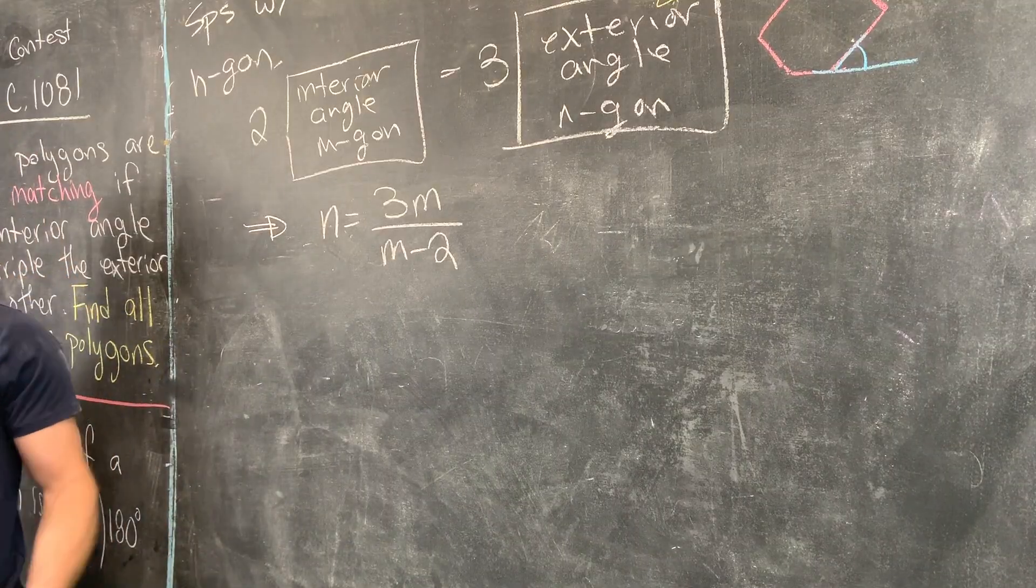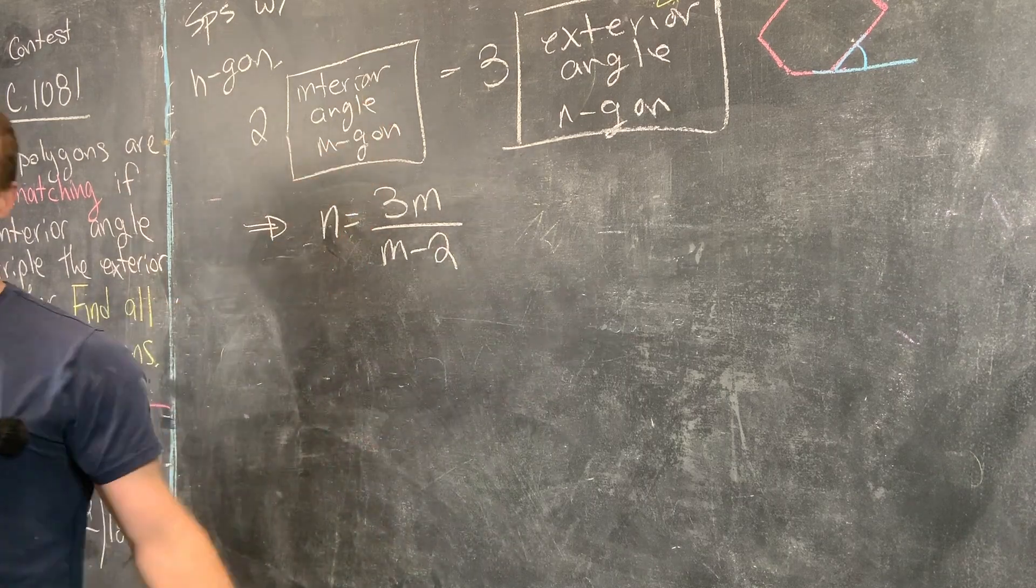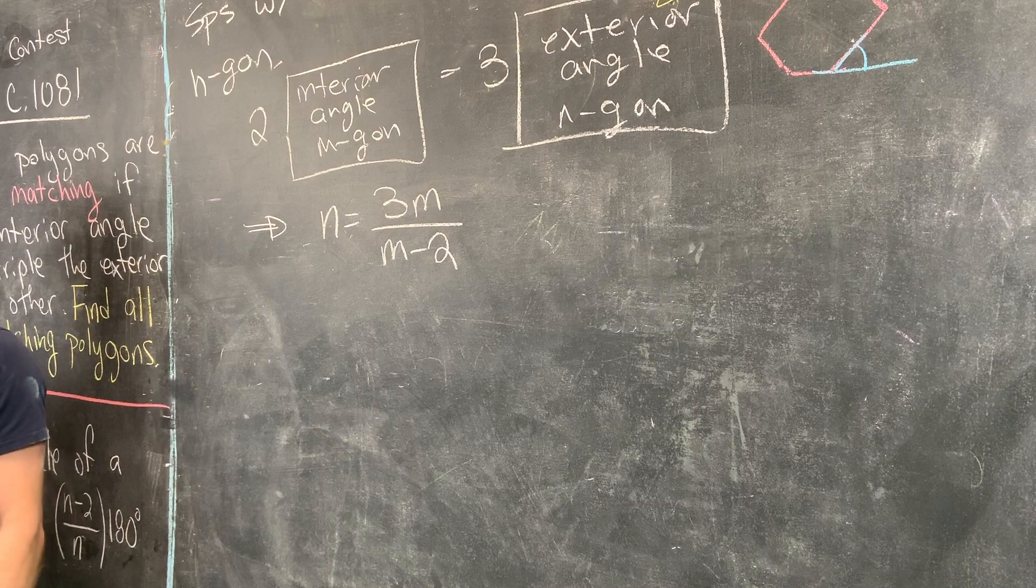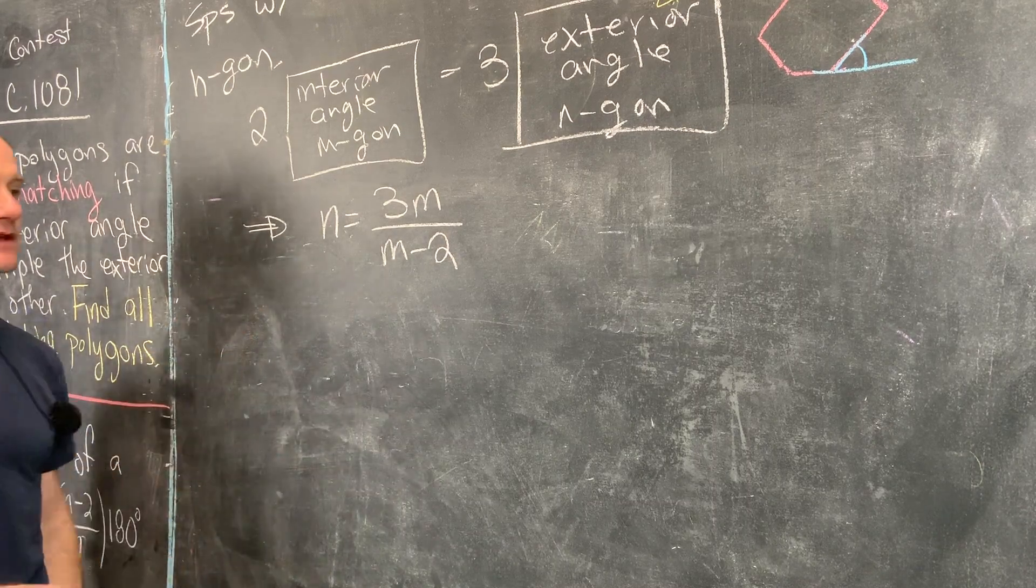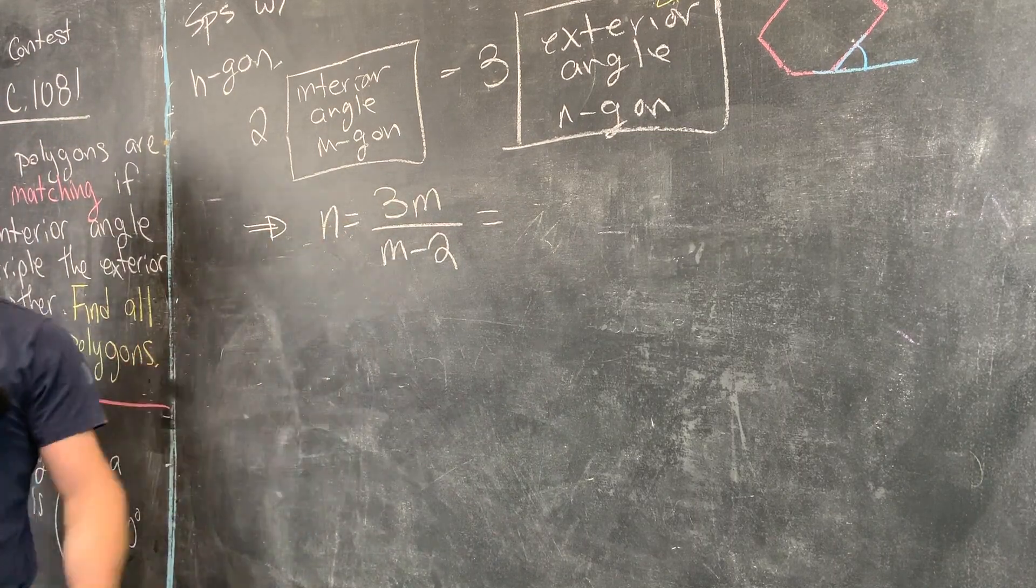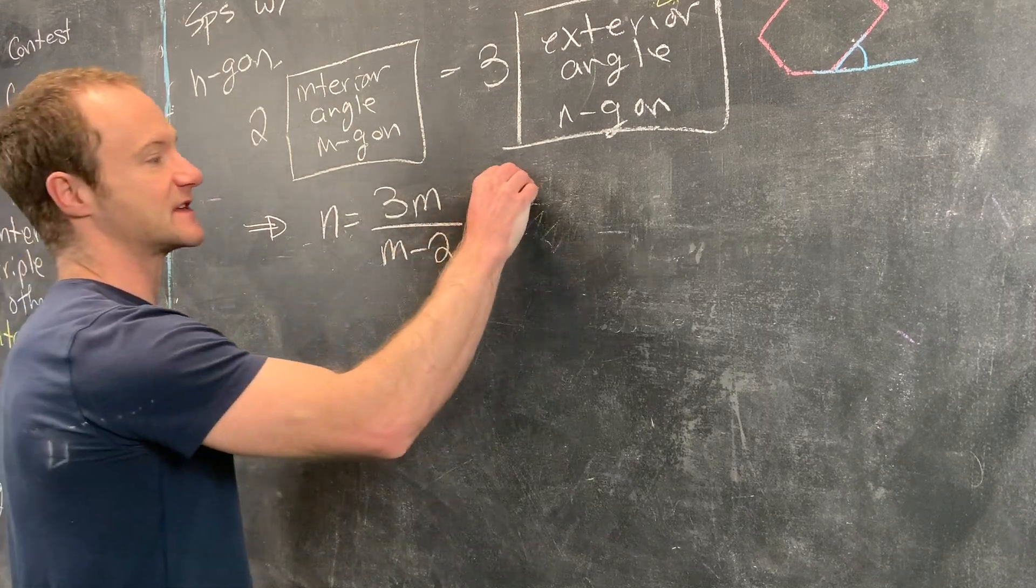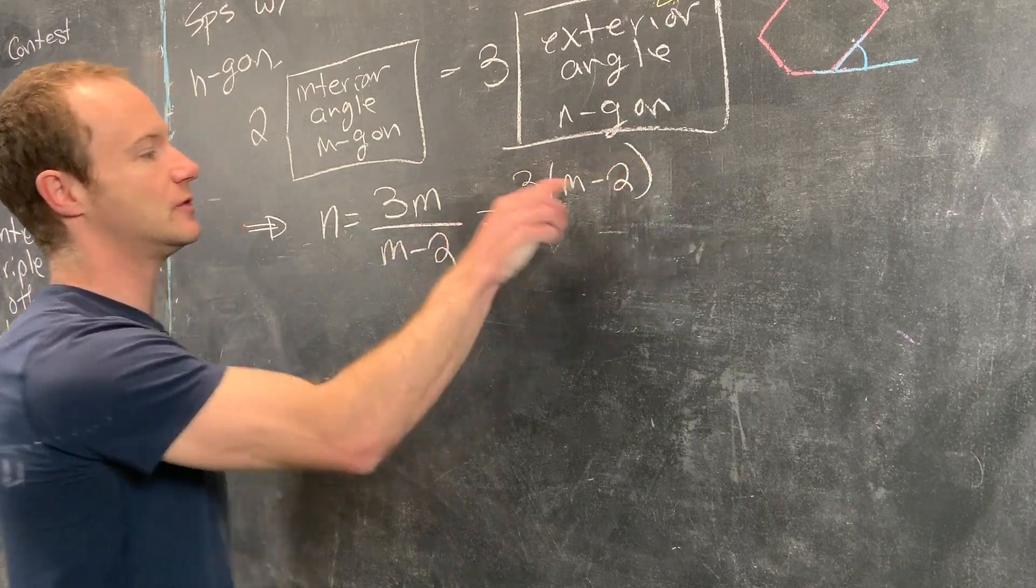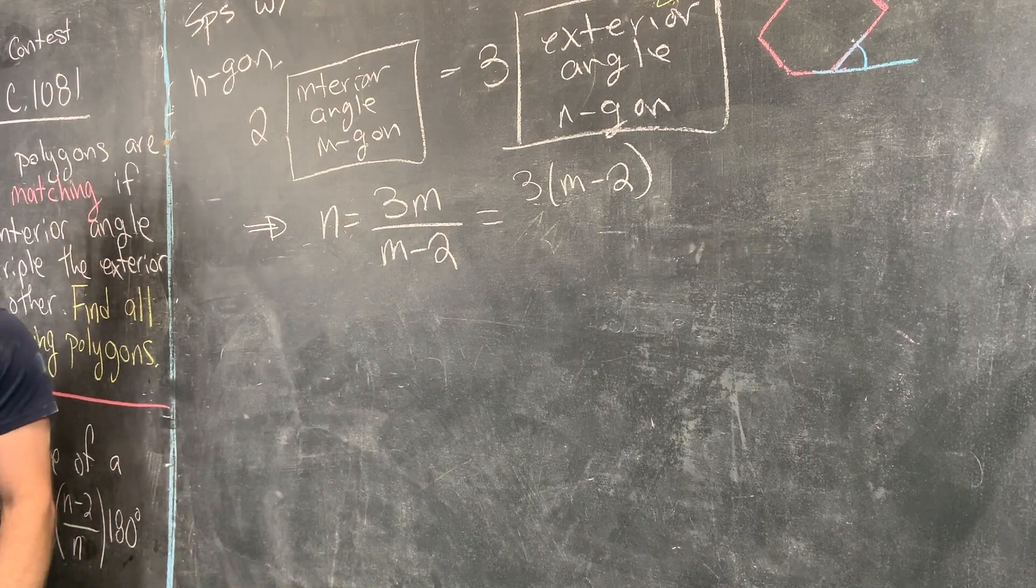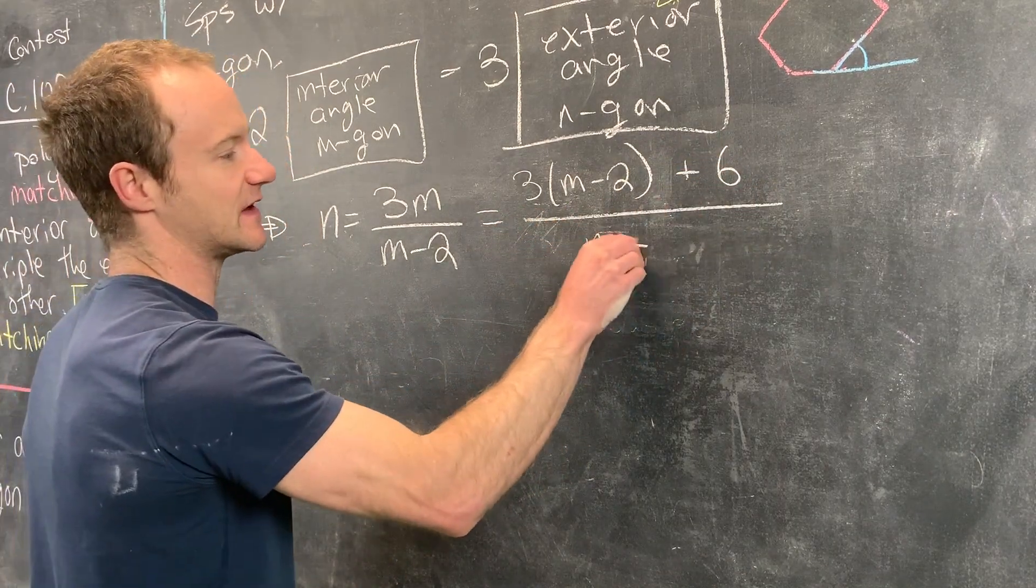So now what I'll do is bring this up and then we'll finish off. We said that if we have twice the interior angle of an m-gon equals 3 times the exterior angle of an n-gon, that gives us this equation relating n and m. Now the next thing we want to do is polynomial division on this right-hand side. Since these are linear polynomials, we can do this with a trick. So I'm going to rewrite the top as 3 times (m-2), but doing that I just subtracted 6 from the entire numerator, which means I can add 6 to the entire numerator and make sure I didn't do anything at all.